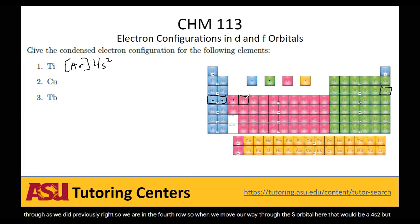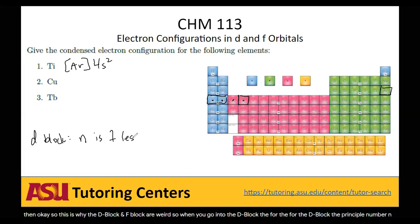But then, this is why the d block and f block are weird. When you go into the d block, the principal number n is one less than the row number. So although we're in the fourth row, the principal number for this d block is not 4d, it's actually 3d. I know, very strange.